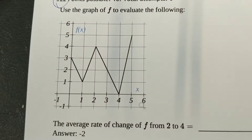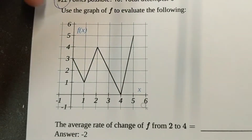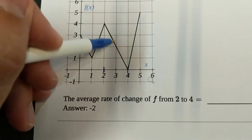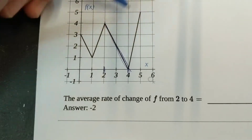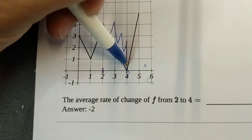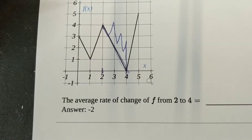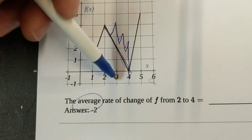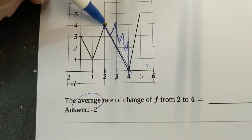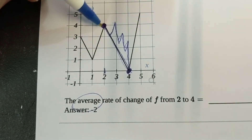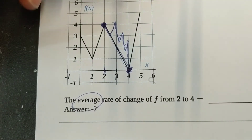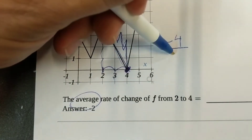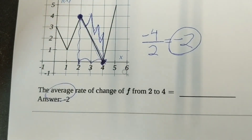Same idea for average rate of change from 2 to 4 on a given function shown as a graph. Even if the function is a bendy curve with ups and downs, we ignore the middle and just slope between the two endpoints. From f(2) to f(4) on the graph, we rise and run it: 4 steps down and 2 steps over, giving negative 4 over 2. Reduce that to negative 2 — the average rate of change is negative 2.